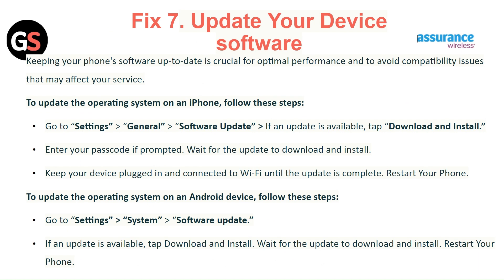Fix 7: Update your device software. Keeping your software up to date is crucial for optimal performance and to avoid compatibility issues that may affect your service. For iPhone, go to Settings, then General, then Software Update. If an update is available, tap Download and Install. Enter your passcode if prompted and wait for the update to complete. Keep your device plugged in and connected to WiFi, then restart your phone.